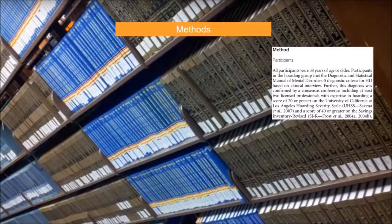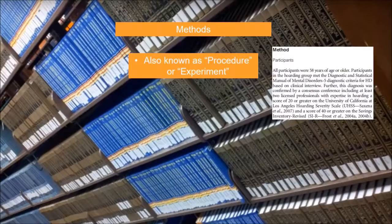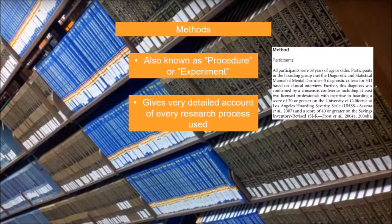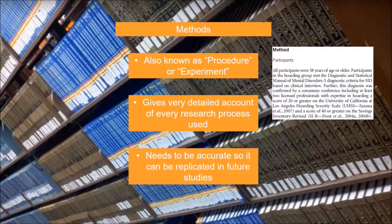The methods section, also known as the procedure or experiment section, gives a detailed account of every research process in the study, including the criteria for selecting subjects as well as every tool or measurement used. The methods section needs to be as precise and accurate as possible so that it can be replicated or improved upon in future studies.